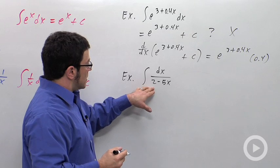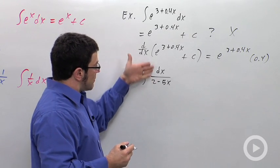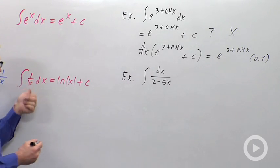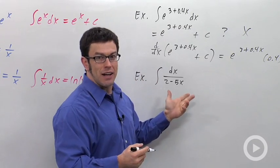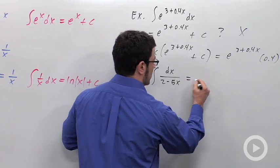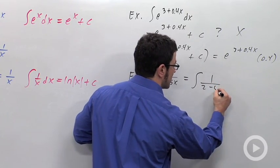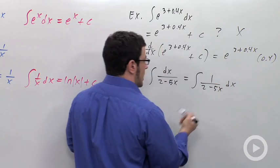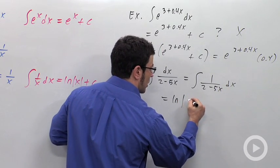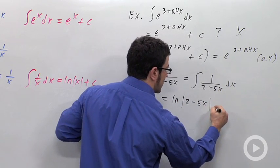Same thing here. This looks a lot like it's of the same form as 1 over x dx. I have 1 over 2 minus 5x dx. I can write this as 1 over 2 minus 5x. And so shouldn't that be the natural log of the absolute value of 2 minus 5x plus c?